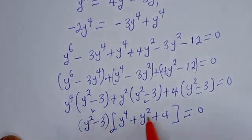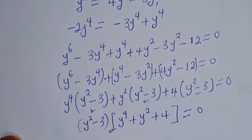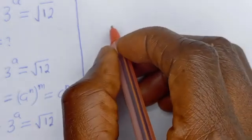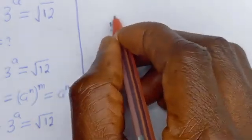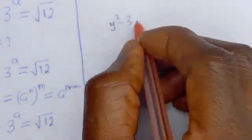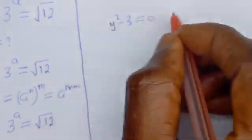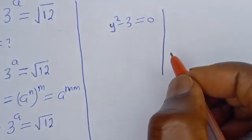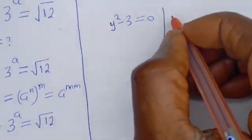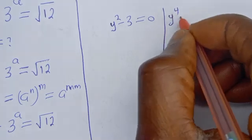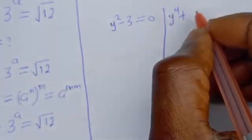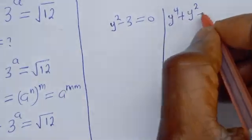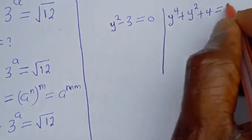There are two cases here. The first case is y squared minus 3 equal to 0, and the second case is y to the power of 4 plus y squared plus 4 equal to 0.